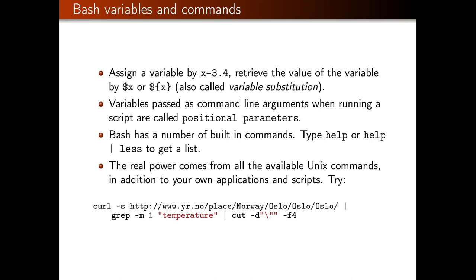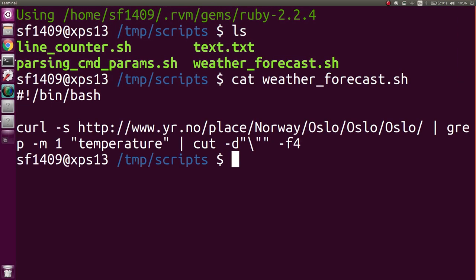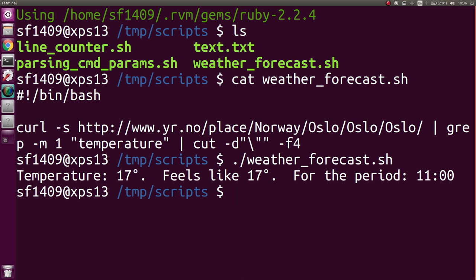Bash by itself is maybe not that powerful — the real power comes when you combine Bash with all the Unix commands on your machine. Here's an example: a one-line Bash script that gives you the weather forecast of Oslo for the next three hours. We download the web page using the 'curl' Unix command, then search for lines containing the word 'temperature', extract only the first finding, and cut out the relevant information. When I run it, I can see the current temperature and the period it's for.